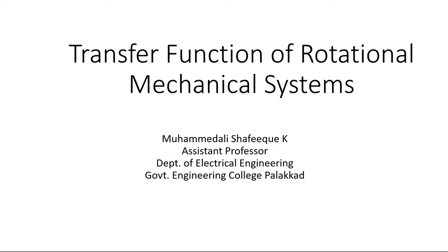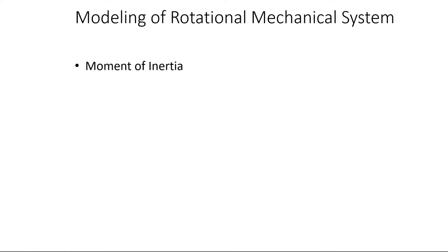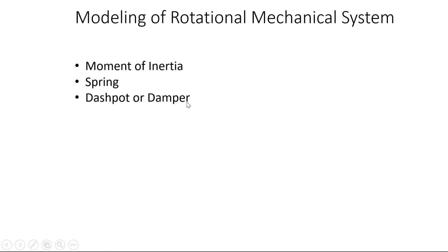Welcome. In this lecture we will discuss the transfer function of rotational mechanical systems. For modeling a rotational mechanical system, we consider three main elements: moment of inertia, spring, and dashpot or damper. In the case of translational mechanisms we considered mass, spring, and dashpot. Similarly, in rotational systems we consider moment of inertia, spring, and dashpot.